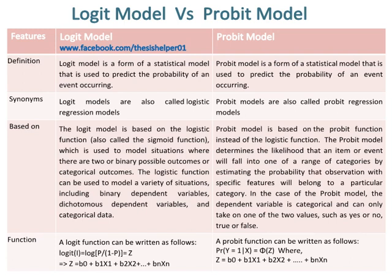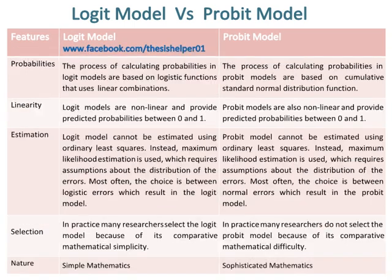A Logit Function and a Probit Function are given for comparison. The process of calculating probabilities in Logit Models is based on logistic functions that use linear combinations, whereas the process of calculating probabilities in Probit Models is based on the cumulative standard normal distribution function.